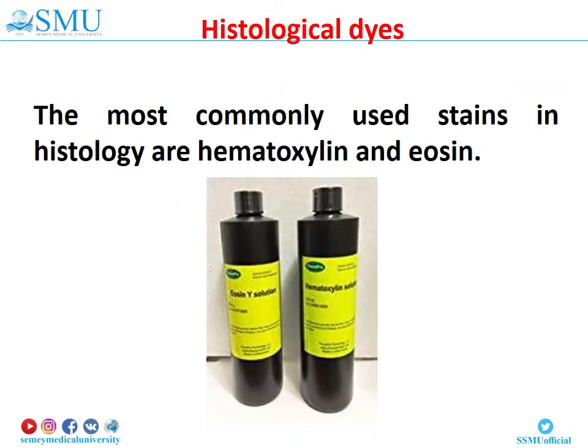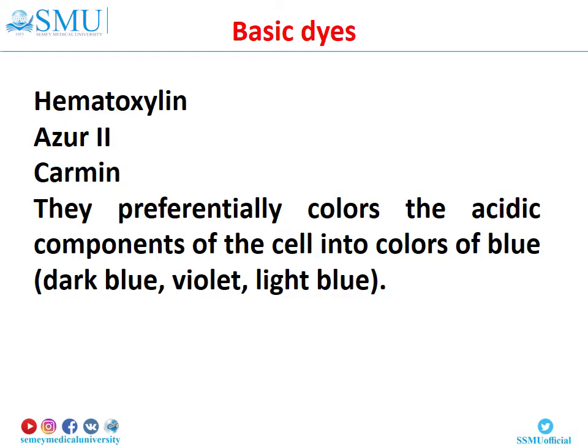The most commonly used stains in histology are hematoxylin and eosin. Basic dyes include hematoxylin, azure-2, and carmine, which represent salts of staining bases. They preferentially color the acidic components of the cell in shades of blue – dark blue, violet, and light blue. Because the most acidic components are deoxyribonucleic acid and ribonucleic acid, the nucleus and regions of the cytoplasm rich in ribosomes stain dark blue. Histological structures stained by basic dyes are called basophilic.